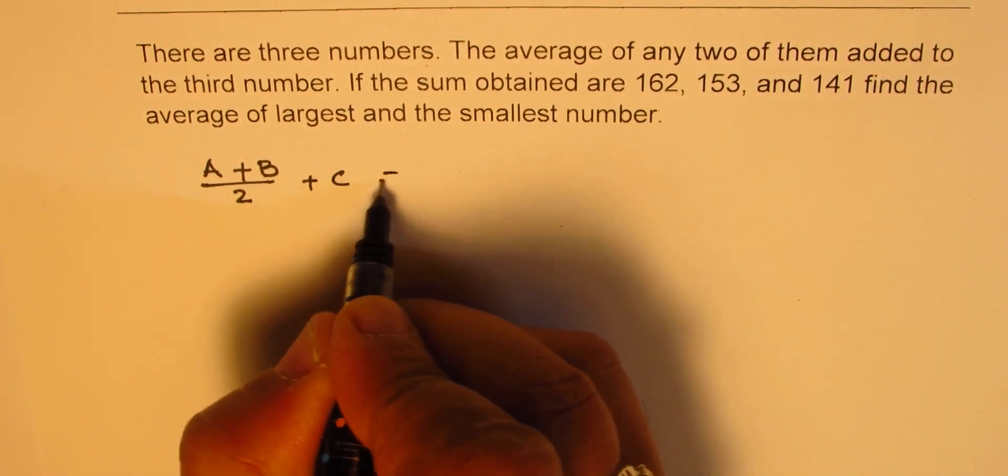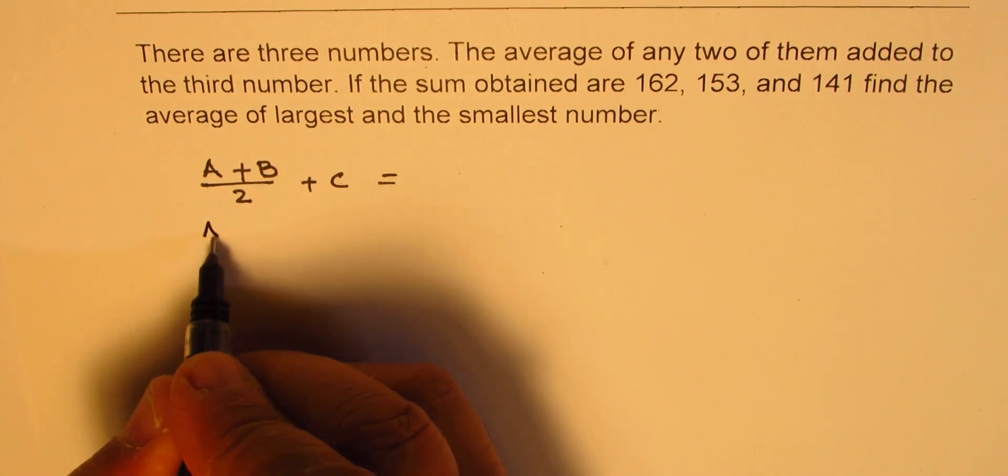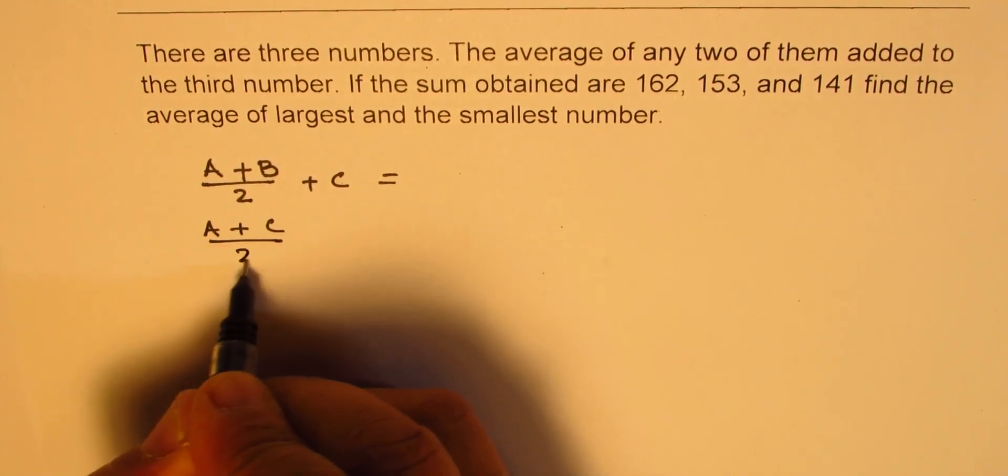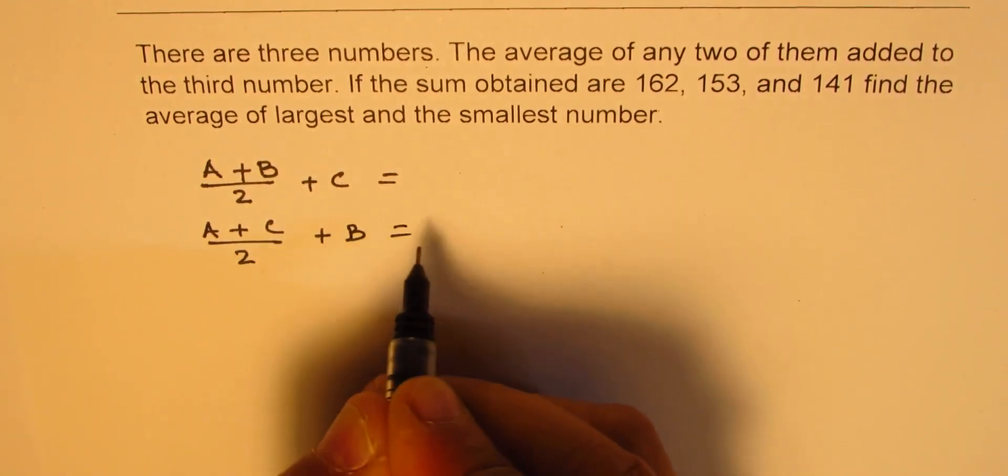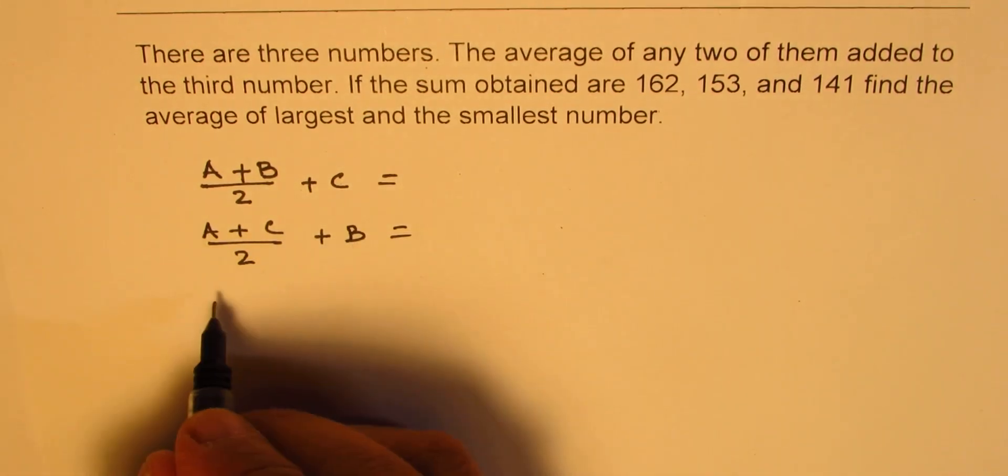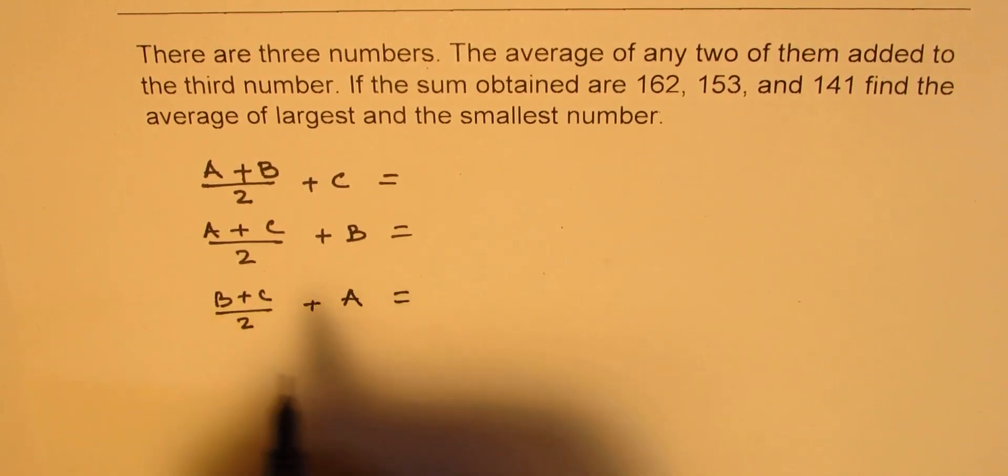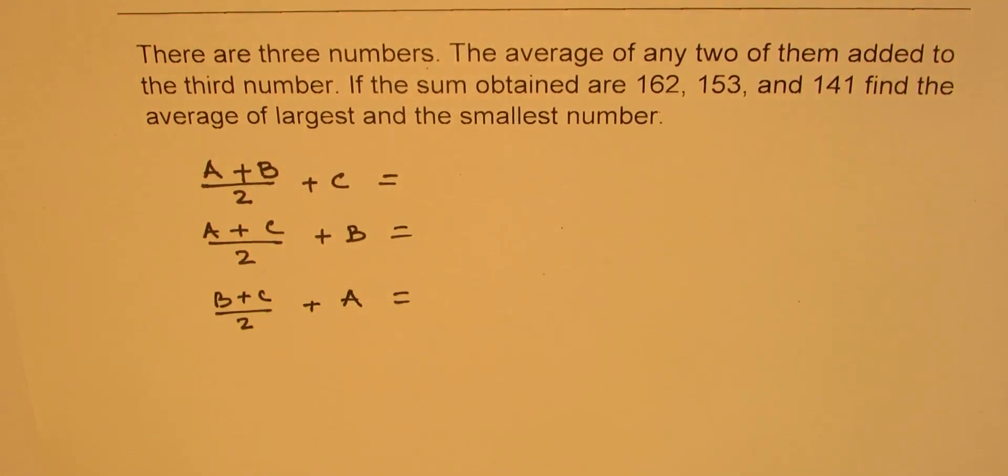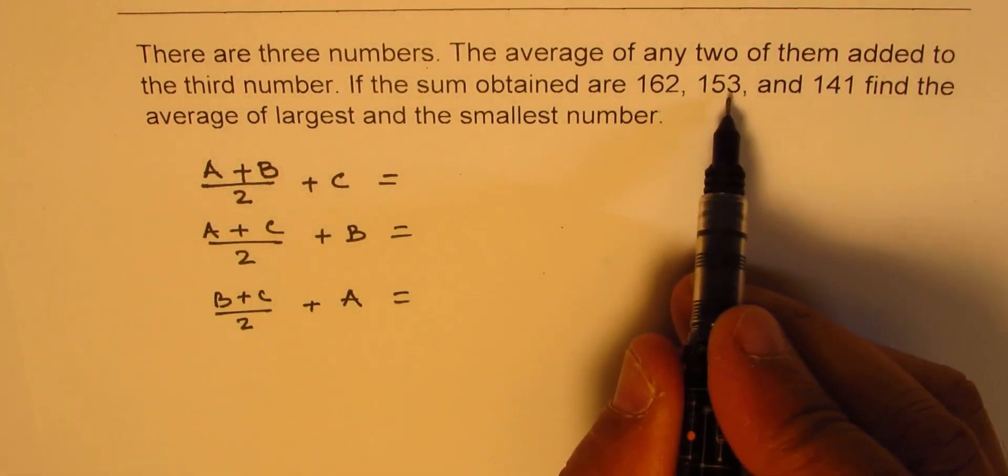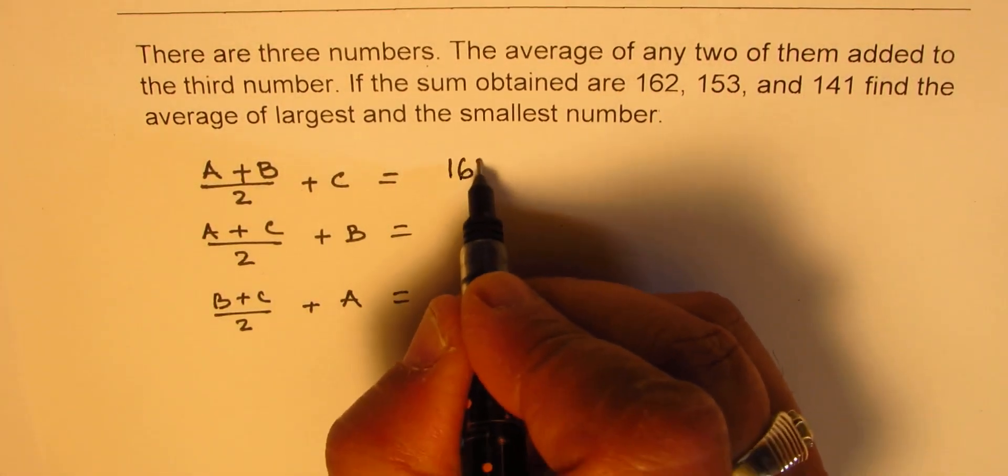So we are saying (A+B)/2 + C is equal to something, then we have (A+C)/2 + B is equal to something else, and the next combination of course is (B+C)/2 + A. And since we have taken A as the largest number, the largest number in this is 162, we are going to put it there, then comes 153 and then comes 141.